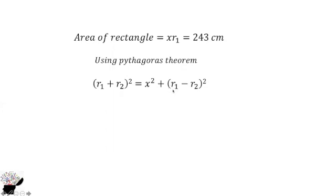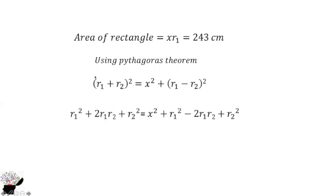From here we expand the brackets on both sides. We get r1² + 2r1r2 + r2² = x² + r1² − 2r1r2 + r2².